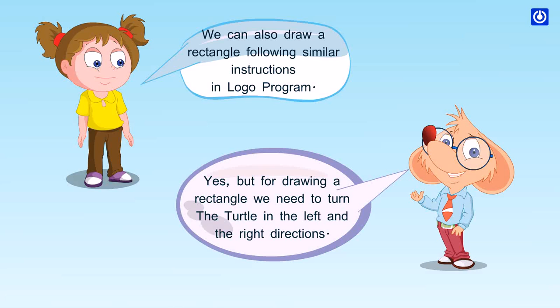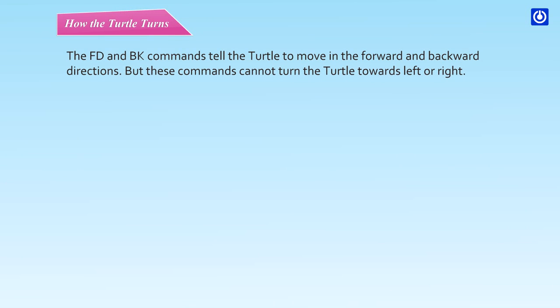For drawing a rectangle, we need to turn the turtle in the left and right directions. The FD and BK commands tell the turtle to move in the forward and backward directions, but these commands cannot turn the turtle towards left or right.